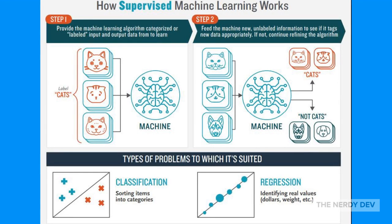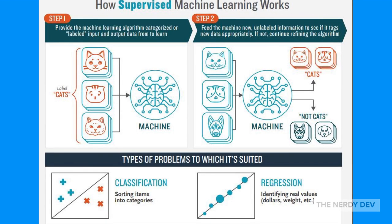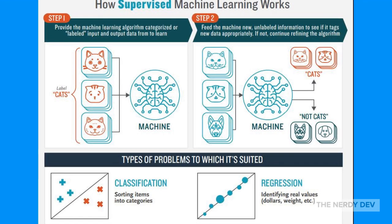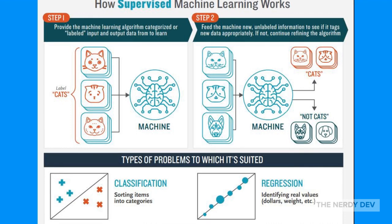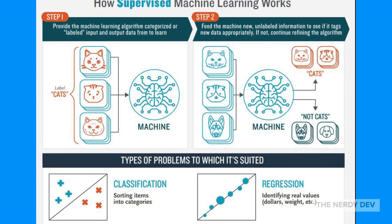The second technique in supervised learning is regression, where the output has a continuous value. Suppose you want to predict house prices in a certain area based on certain parameters — we use regression where the goal is to predict a value as close to the actual output as the model can. Evaluation is done by computing the error value; the smaller the error, the greater the accuracy of your machine learning model.